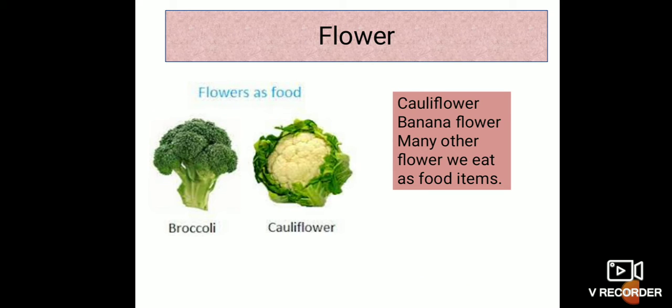The first part of plant we will cover is flower. Flowers like cauliflower and banana flower are among the many flowers we eat as food items. Cauliflower and banana flowers are eaten for their flavor and the food stored in them.